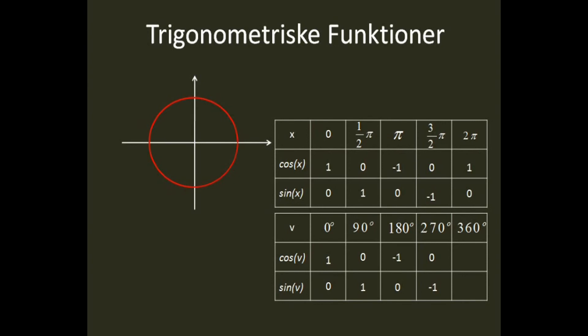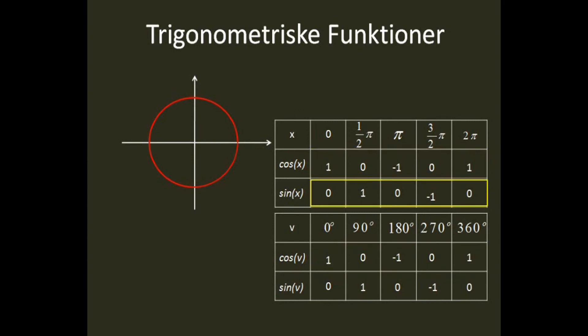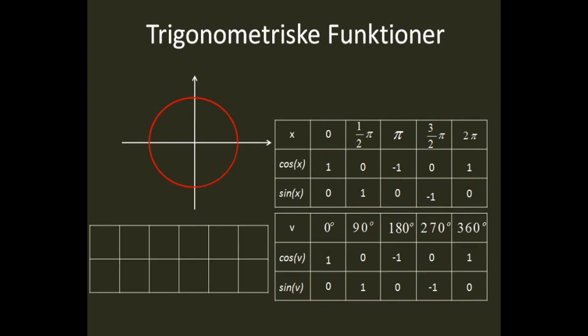Som bekendt har en cirkel 360 grader, så kosinus til 360 er lige med 1 og sinus til 360 er lige med 0. Læg nu mærke til, at kosinus til x starter ved 1.